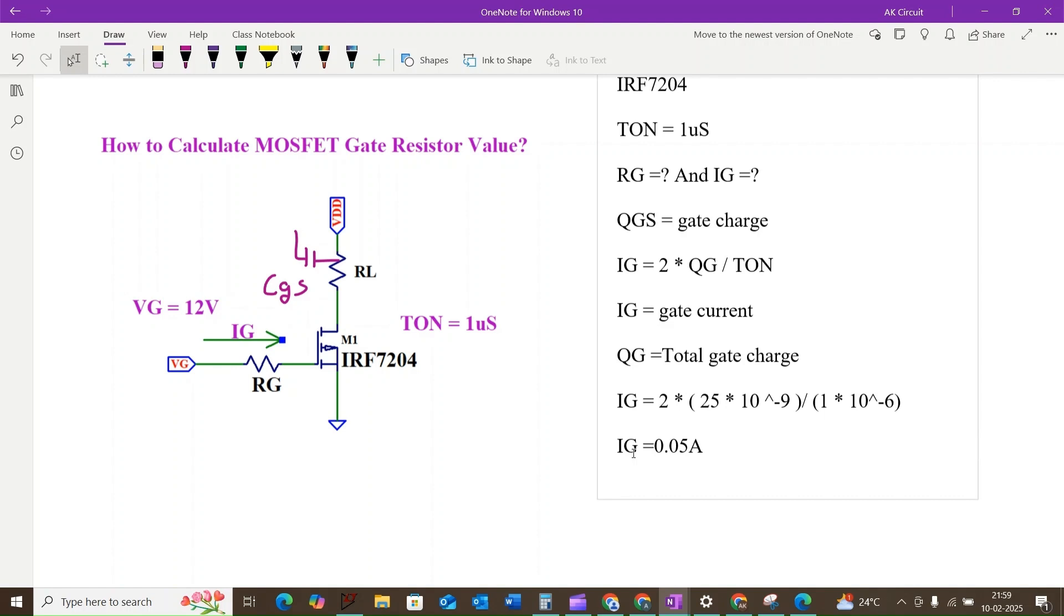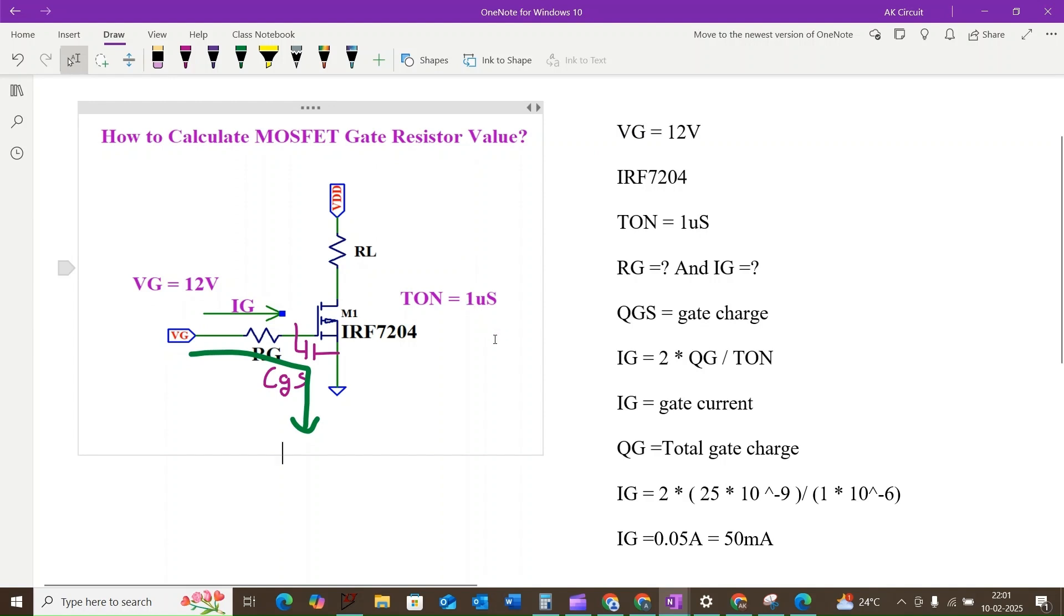By applying the Kirchhoff voltage law KVL to the gate loop, the equation is given by VG is equal to IG into the gate resistance RG, which is equal to 0. To solve for RG, we rearrange the equation as RG is equal to VG divided by IG.